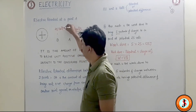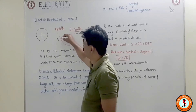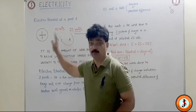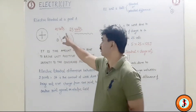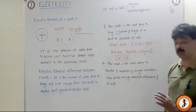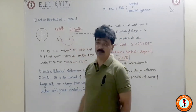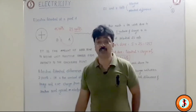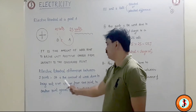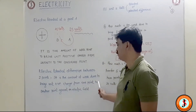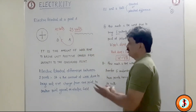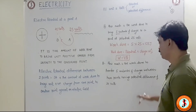So now point B is at 45 volts. If I have to transfer one Coulomb of positive charge from A to B, I have to do 20 joules of work — see the difference: 45 minus 25 is 20. So 20 joules is the work done to bring unit positive charge from A to B. That is the potential difference between A and B. Potential difference between two points is the amount of work done to bring unit positive charge from one point to another against an electric field. Here the PD is 20 volts.